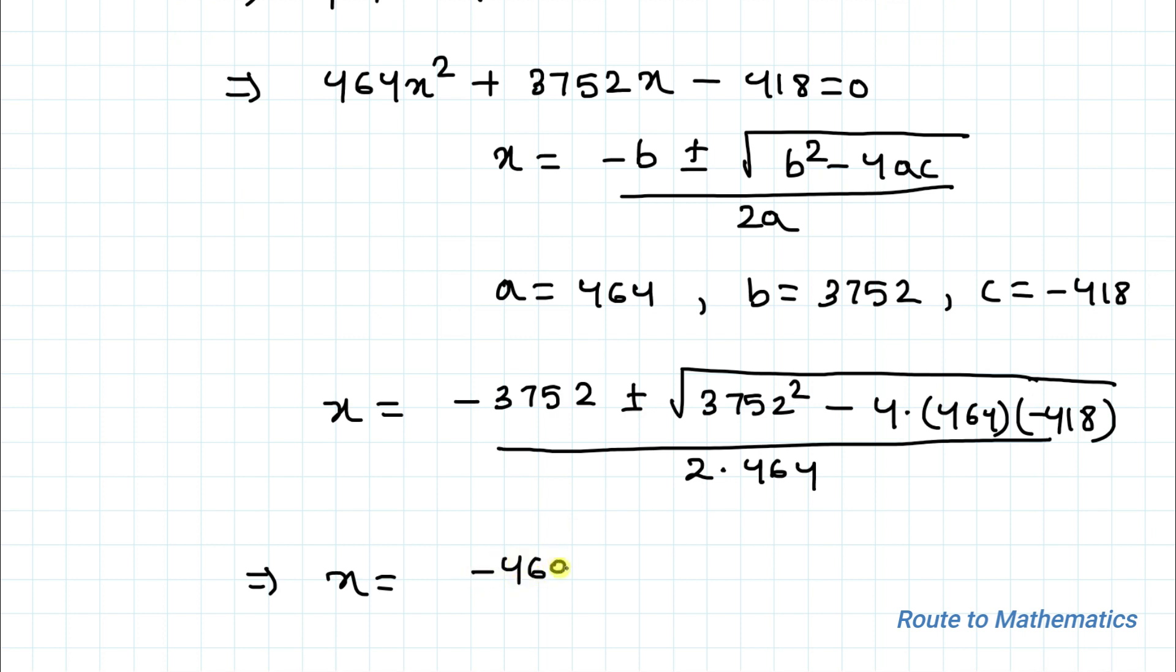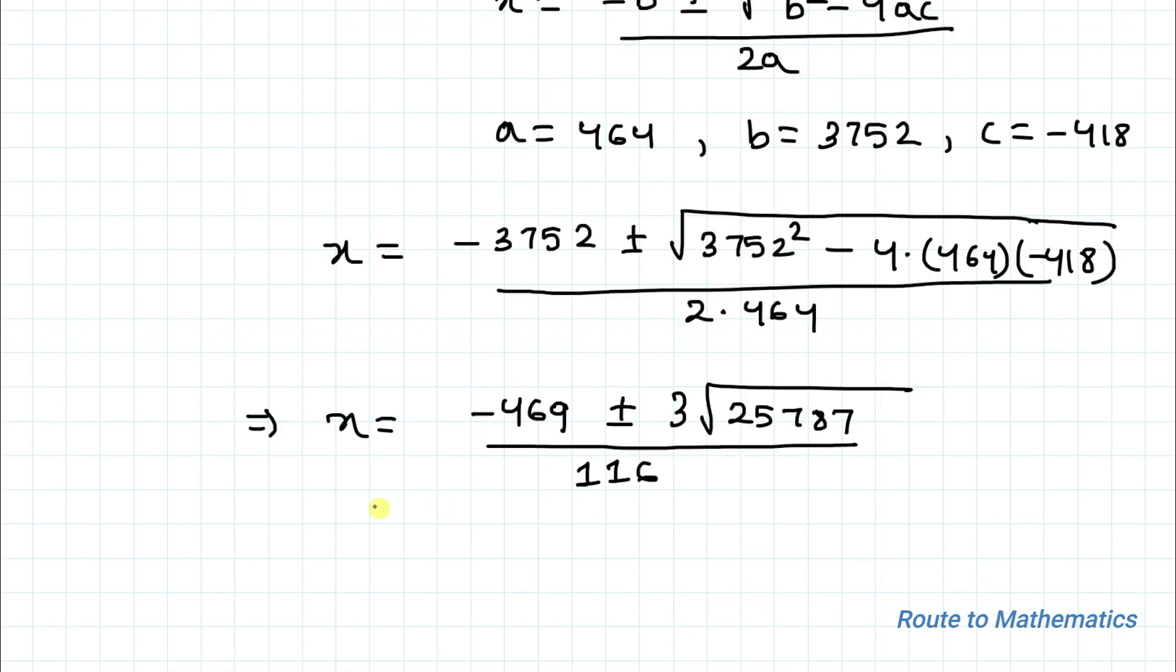In this case, only the positive value of x makes sense, so we will just ignore the negative value. We can write x equals to 3 multiplied with root under 25787 minus 469 divided by 116. This is our answer.